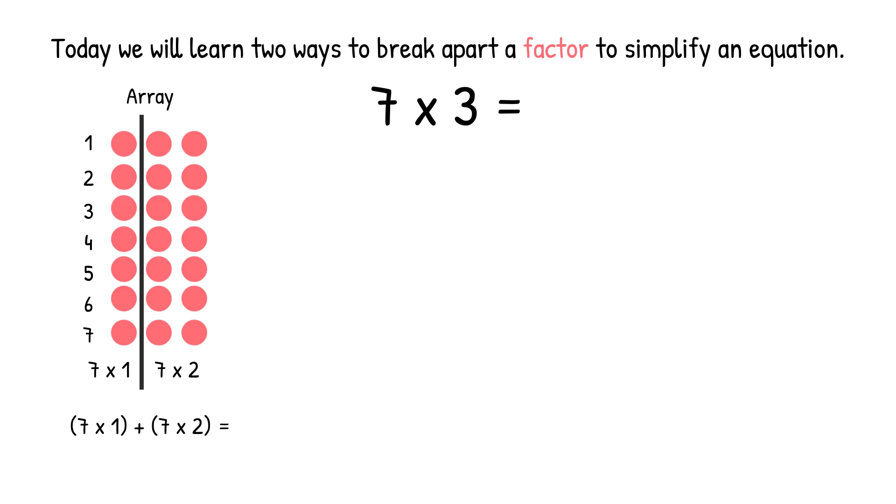Now we have to find both of those products in order to do the addition. 7 times 1 equals 7, and 7 times 2 equals 14. Now we can add those products together. 7 plus 14 equals 21. So 7 times 3 equals 21.